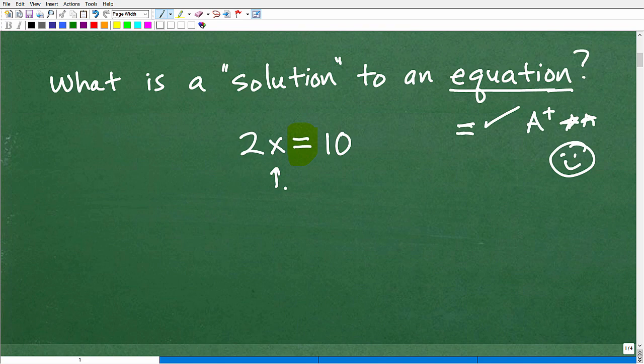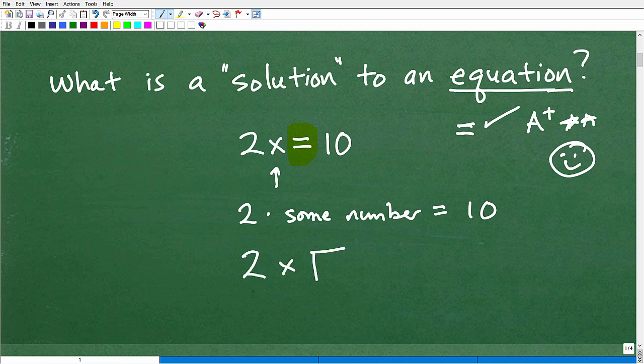This x in algebra represents a number, it's a variable. So what we have here is 2 times some number is equal to 10. Now, if you think back to your second grade math or third grade, first grade, you probably had problems like this: 2 times the little box is equal to 10. Remember those days? That's when things were awesome, like life was so simple. You just went to school, elementary school, and you figured these problems out.